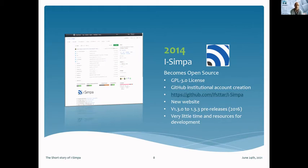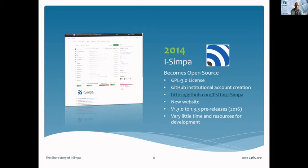We decided to propose to the community to develop ISAPA with us. In 2014, we opened ISAPA as an open source software. We worked very hard to propose a clear source code so that any contributor could propose their own contribution. We changed the official language of the software to English so that any contributor could understand the code. We realized new extensions and development, and distributed the software as open source on the GitHub platform under a GPL 3.0 license.